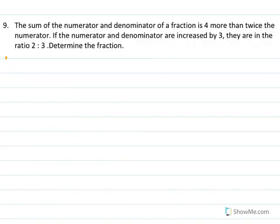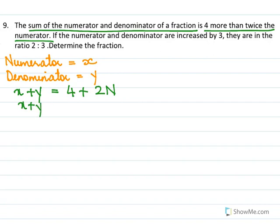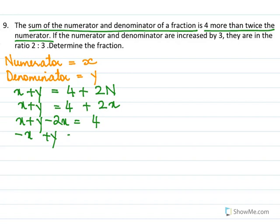For the next sum, let numerator be x and denominator be y. The first part says the sum of numerator and denominator is 4 more than twice the numerator: x plus y equal to 4 plus 2x. Rearranging: minus x plus y equal to 4. This is equation 1.